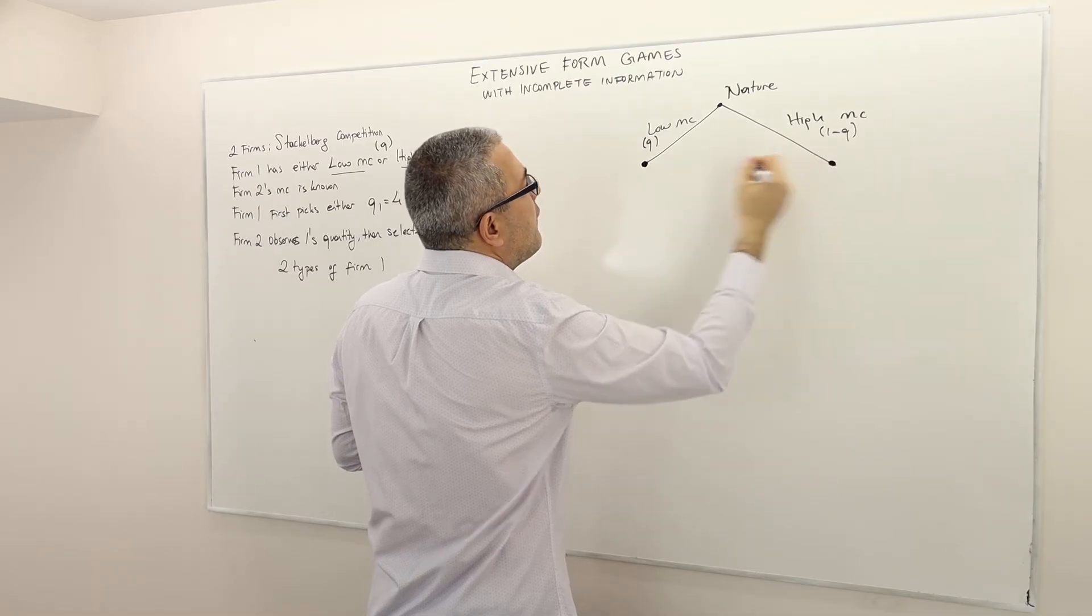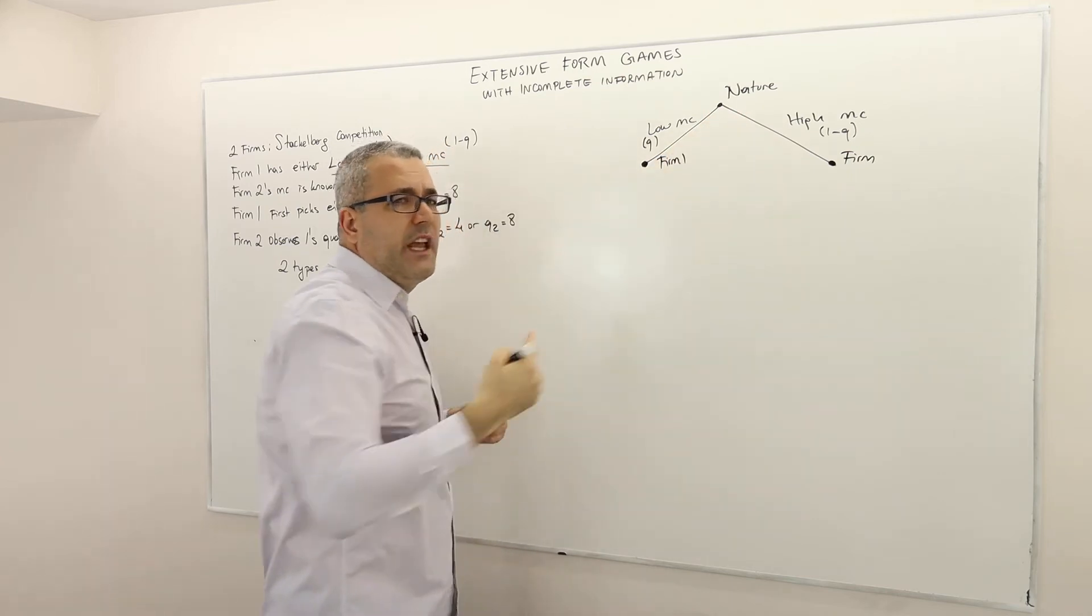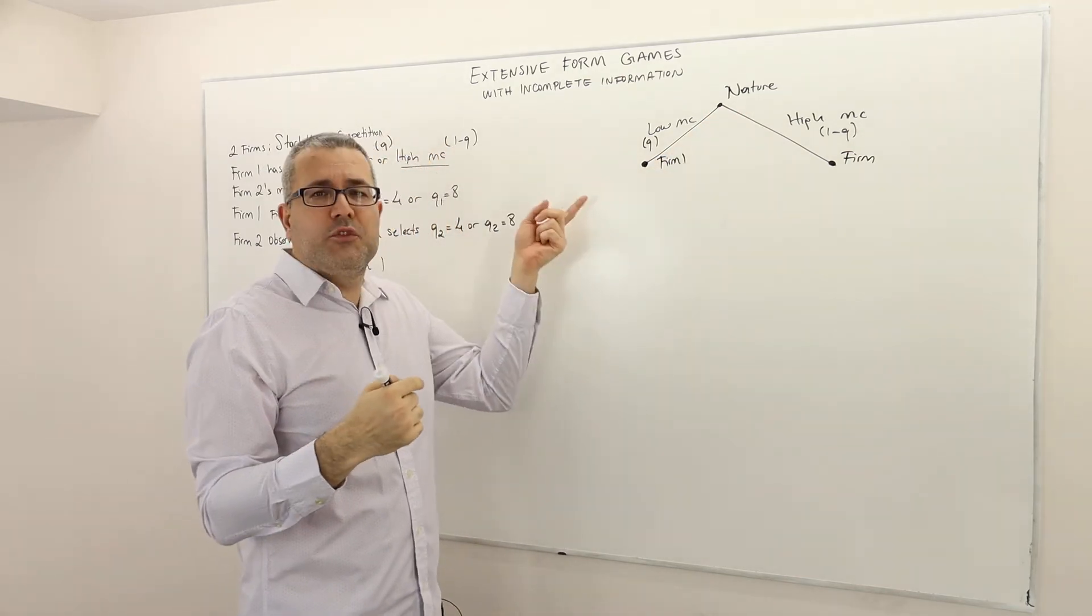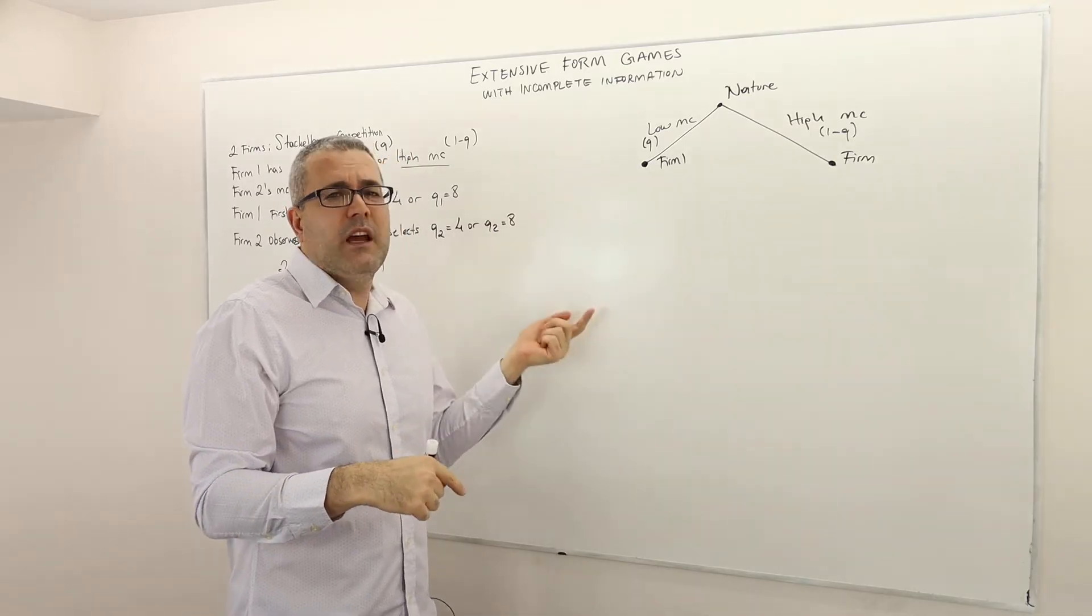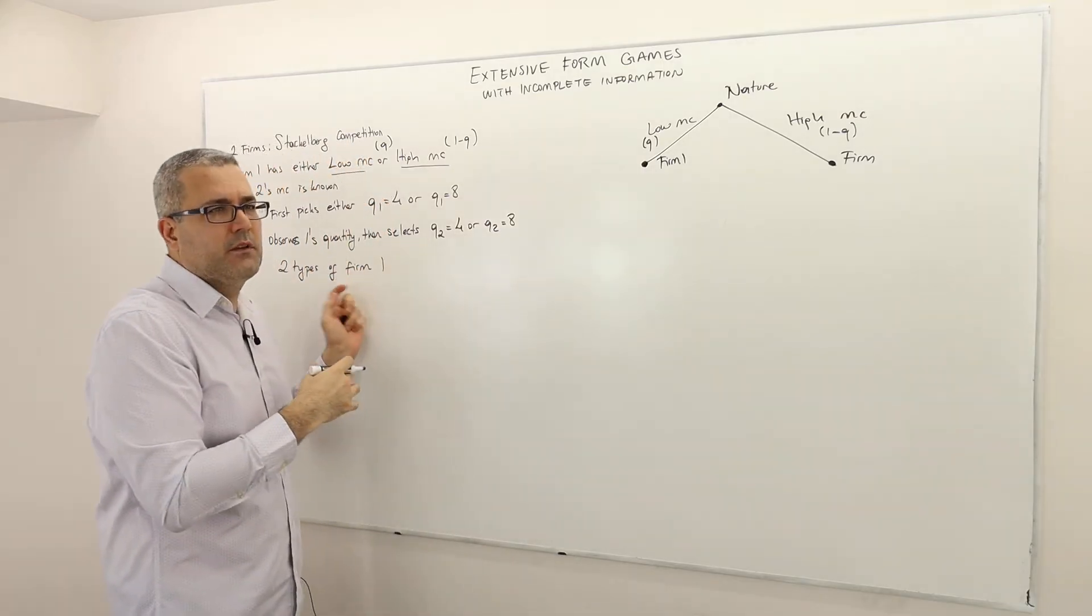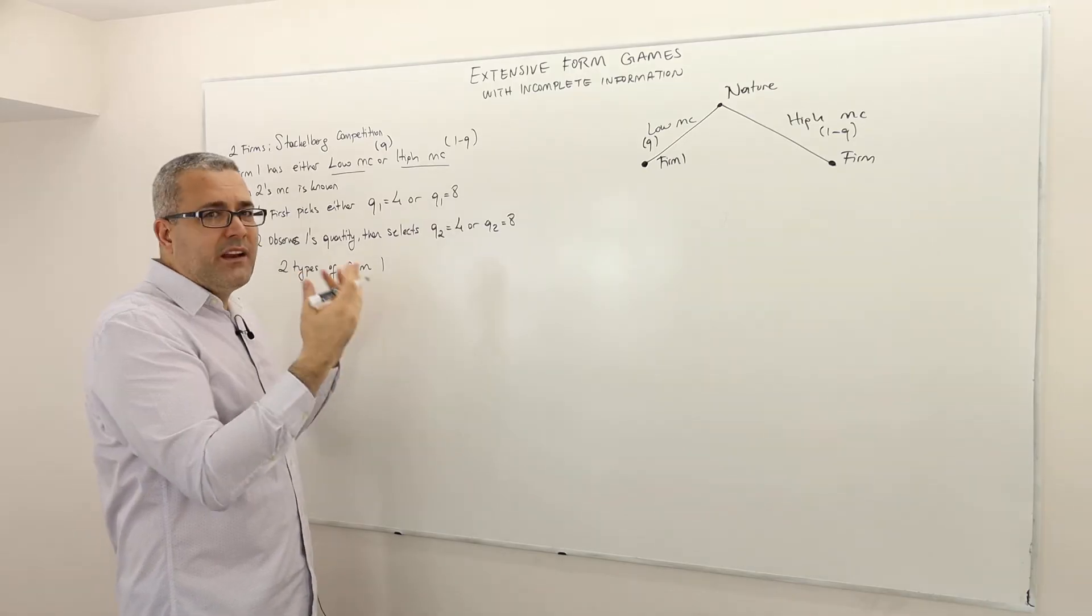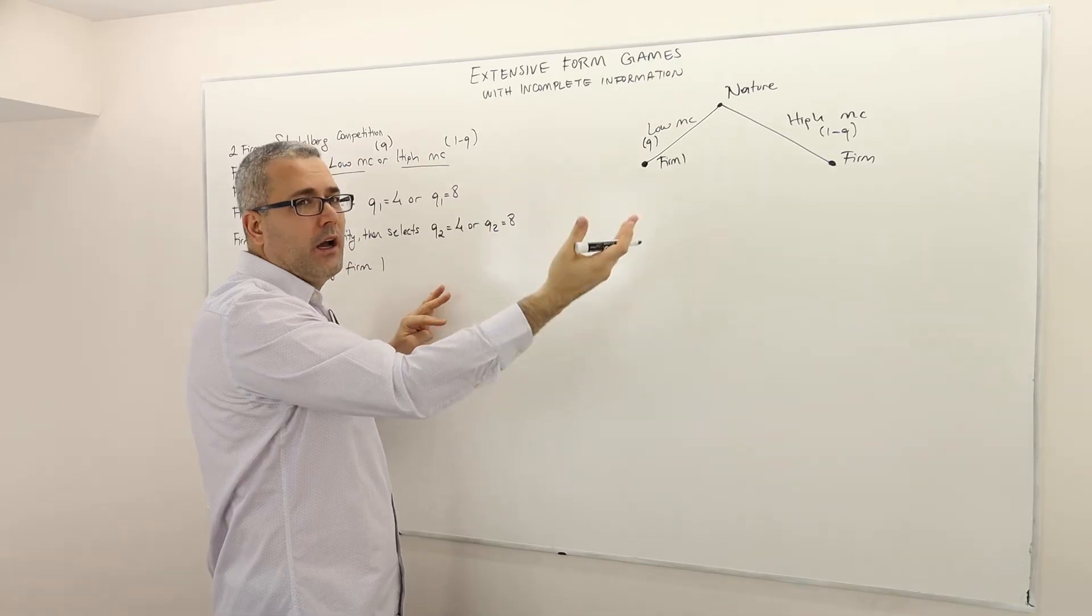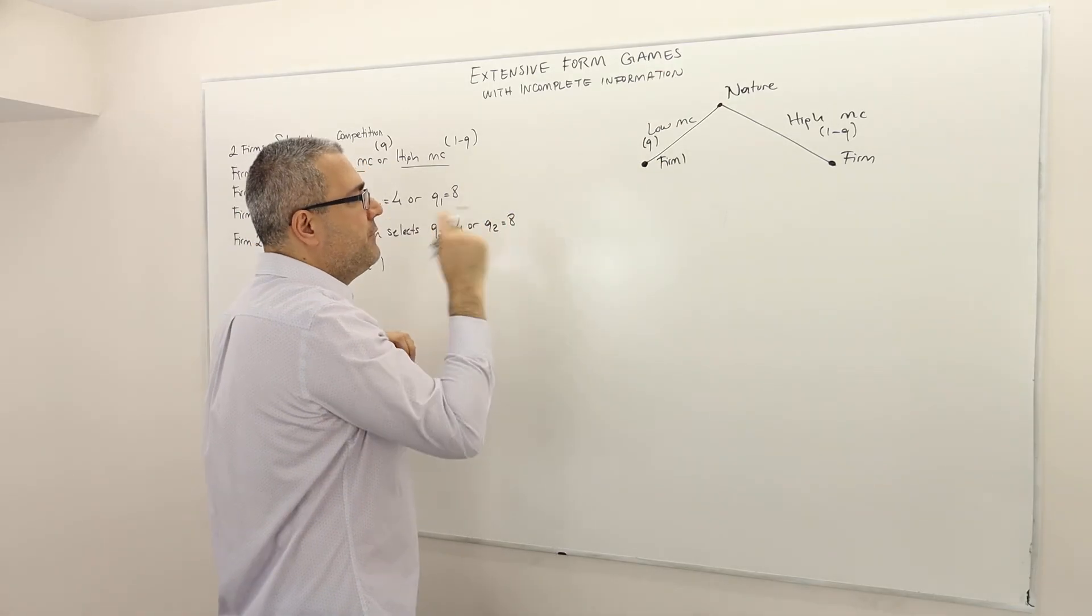Well then what? So here firm 1, these are firm 1's decision nodes. Firm 1 observes the nature's choice. Once again I kind of treat nature as a player but when I analyze this game I will actually ignore the nature because it's not really the player in my strategic environment. Why? Well as I said I do not want to analyze why and when firm 1 decides to choose low or high marginal cost. That's not part of my question.